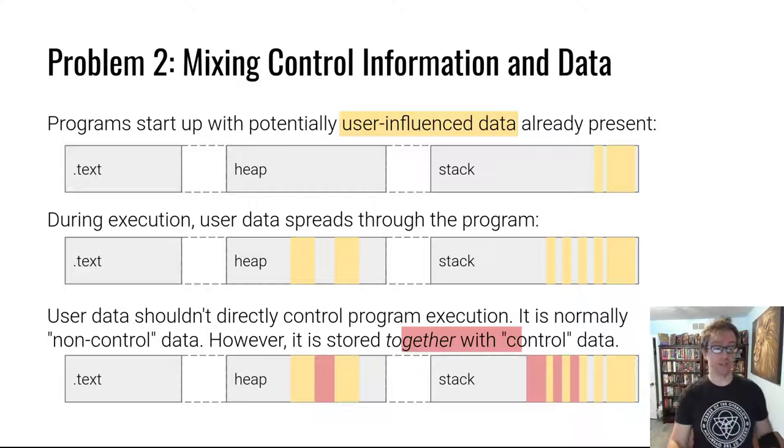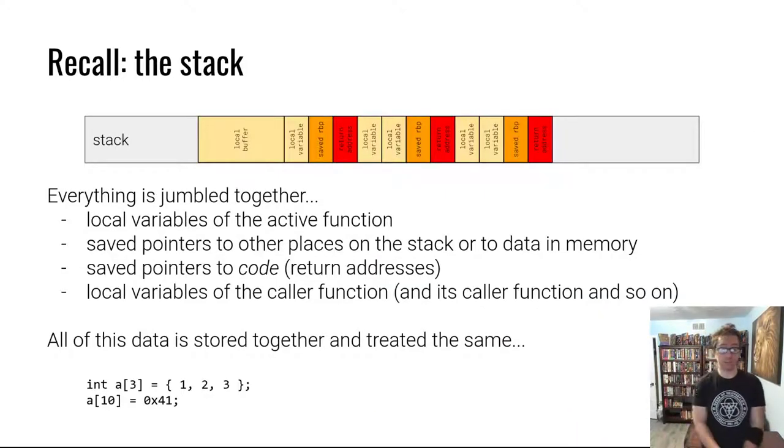in those same general memory regions together with non-control data including user data. Recall the stack, for example. Everything on the stack is just jumbled together. Functions have their function frames on the stack containing local variables of the active function, some of which are user controlled, potentially attacker controlled,